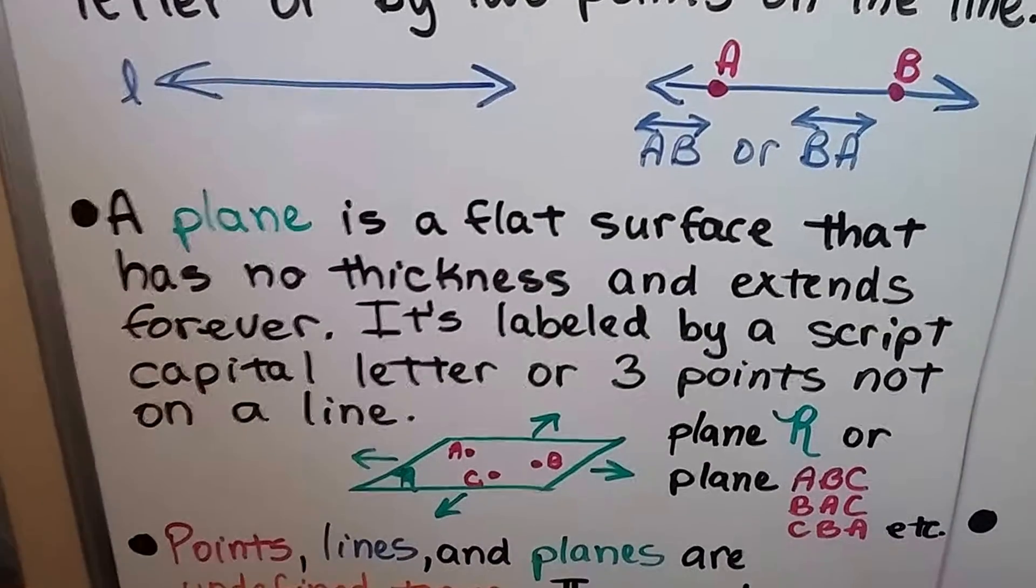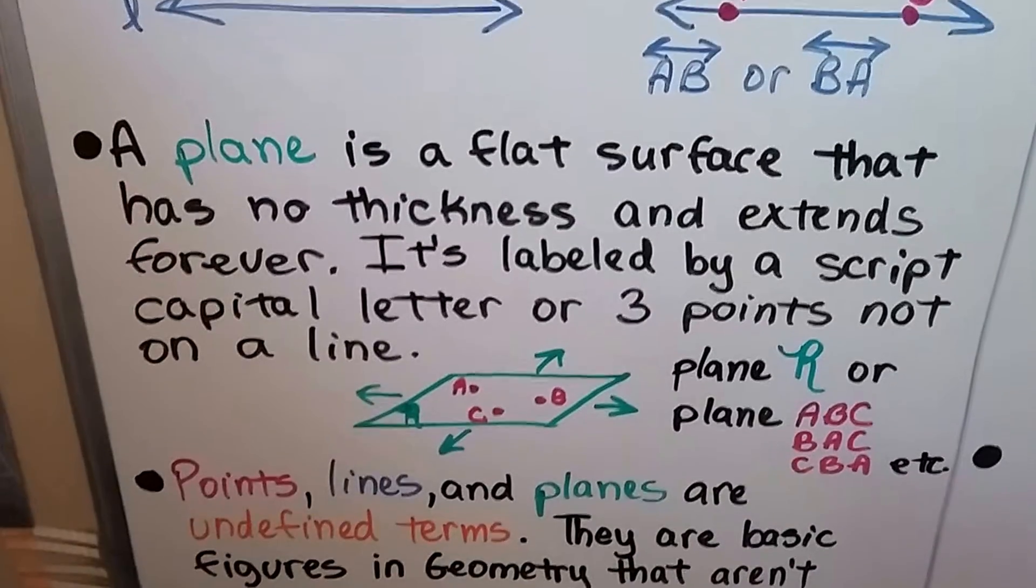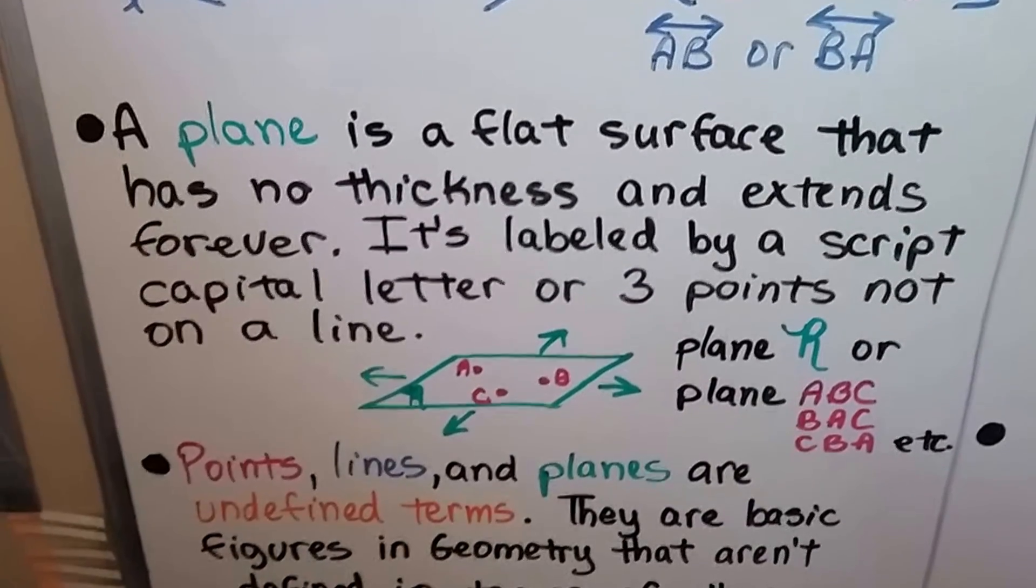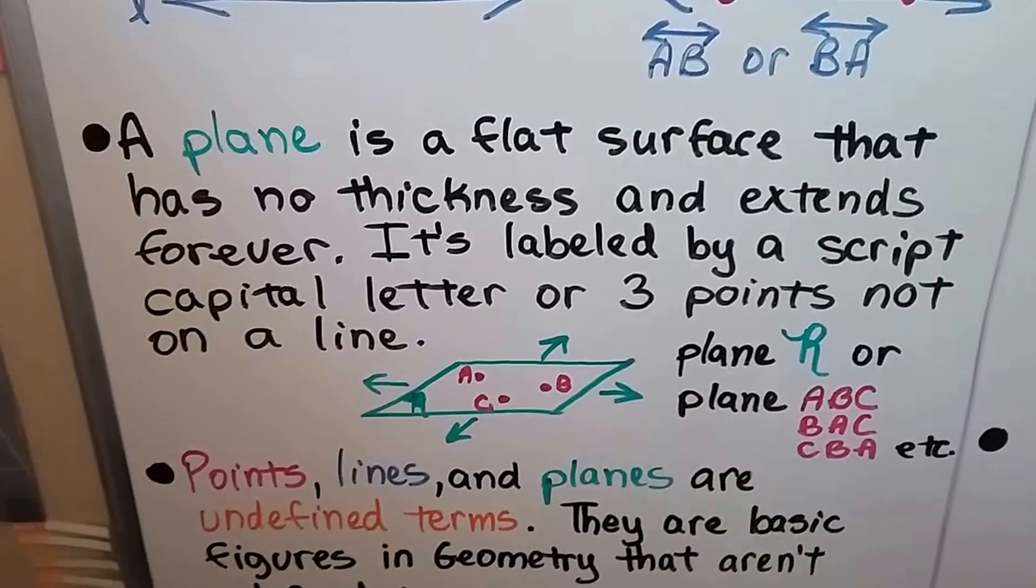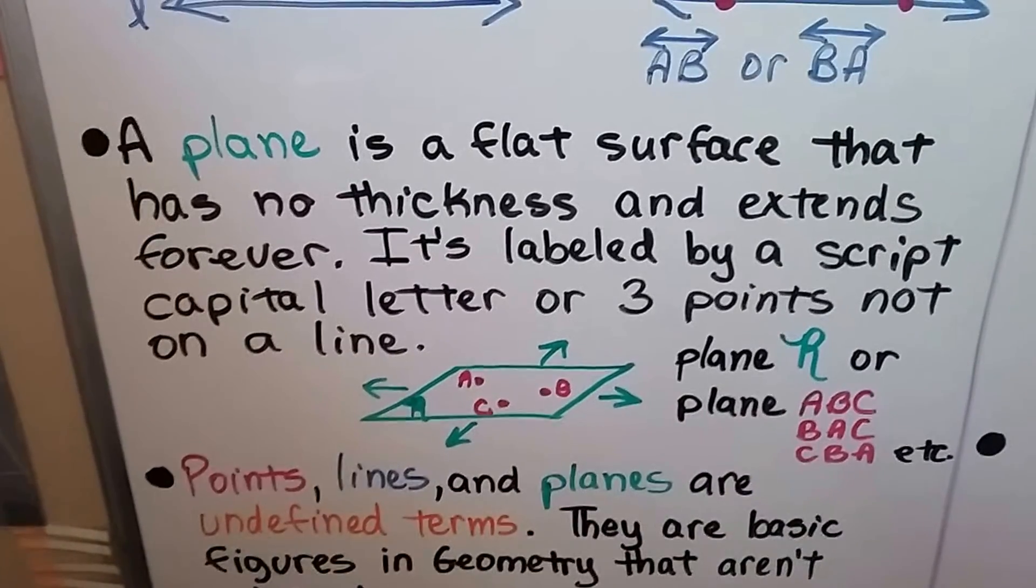A plane is a flat surface that has no thickness and extends forever. It's labeled by a script capital letter, so this would be plane R, or three points not on a line.